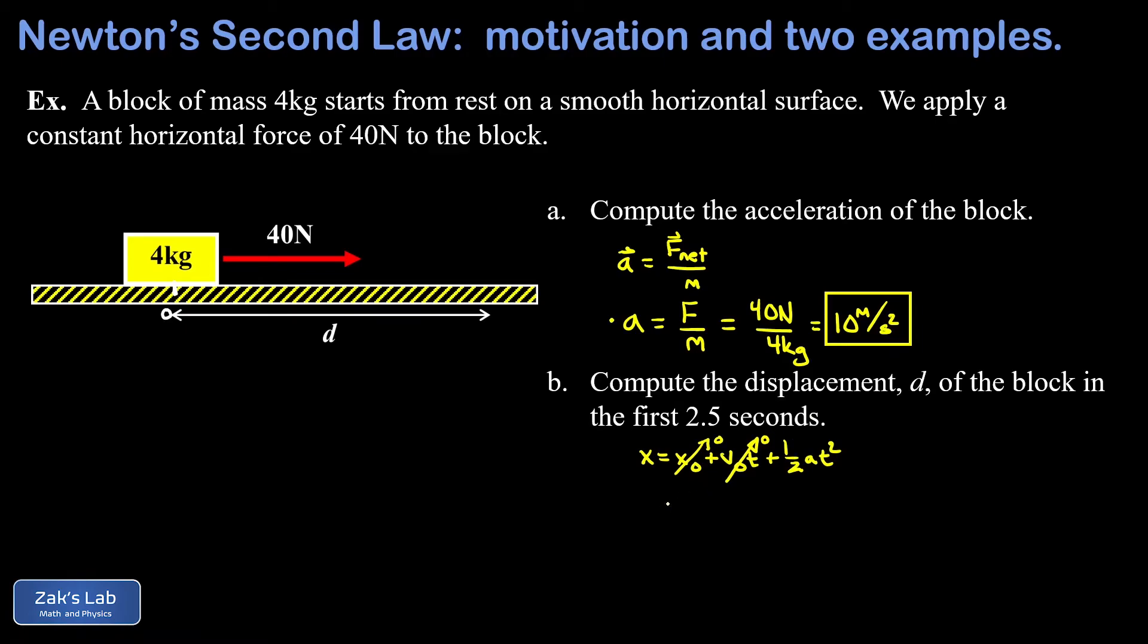In our final position, we have a name for that in the diagram, that's little d. So d is going to be one half at squared. That's one half times our acceleration of 10 meters per second squared, times our time of 2.5 seconds, all squared. And when I run the numbers on this to three significant digits, I get a displacement of 31.3 meters.